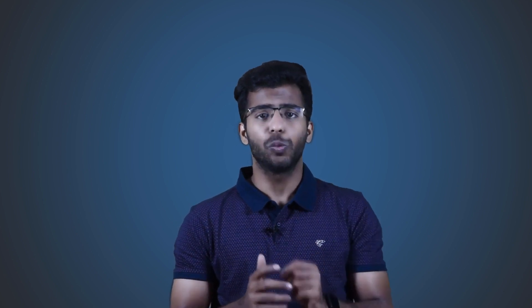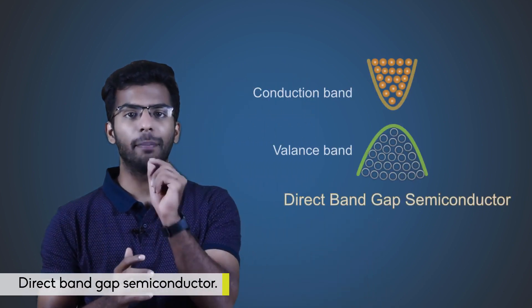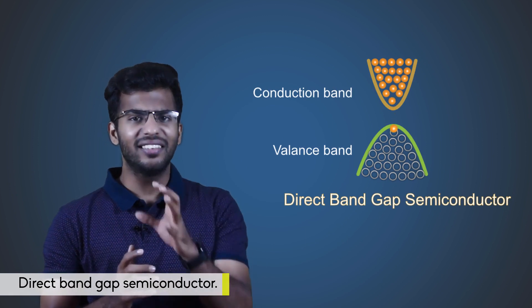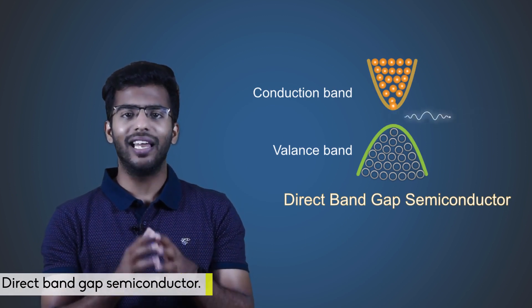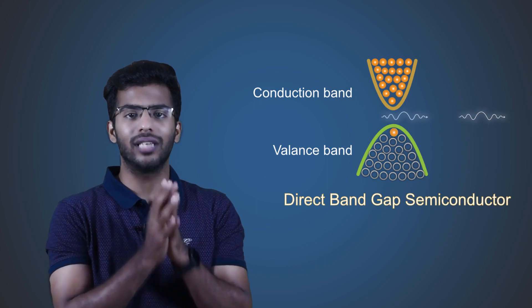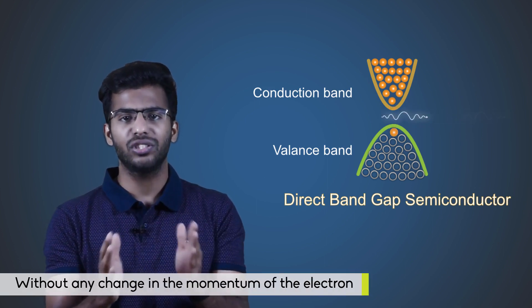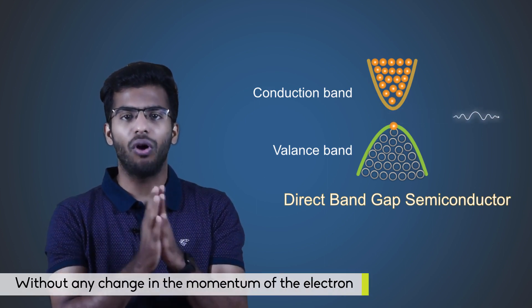In this laser, the active medium is a semiconducting material. However, the semiconducting material should have certain properties. At first, it should be a direct bandgap semiconductor. In this type of semiconductors, the recombination of electrons and holes occurs without any change in the momentum of the electron.